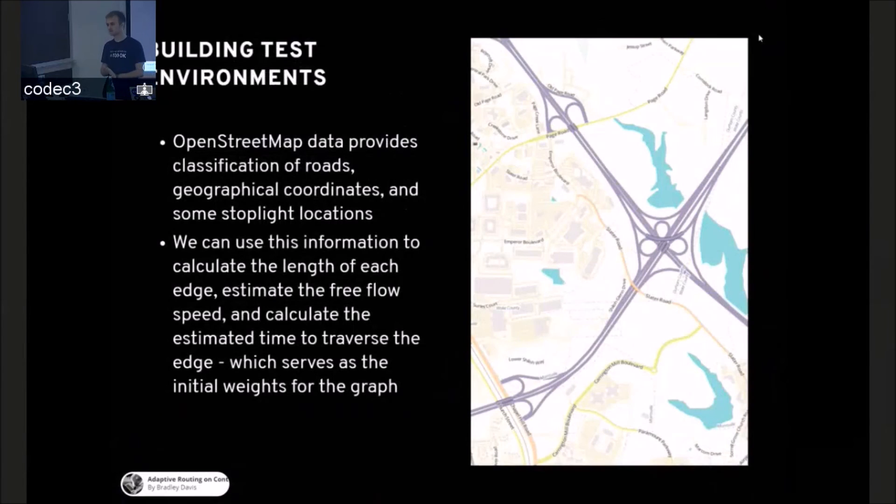Building test environments was kind of difficult, but OpenStreetMap provides lots and lots of good data like classifications of roads, geographical coordinates, and stoplight locations. And you can use those to calculate distances, estimate free flow times from government manuals, and the most important is estimate the time to traverse any particular edge, which serves as the default weight.